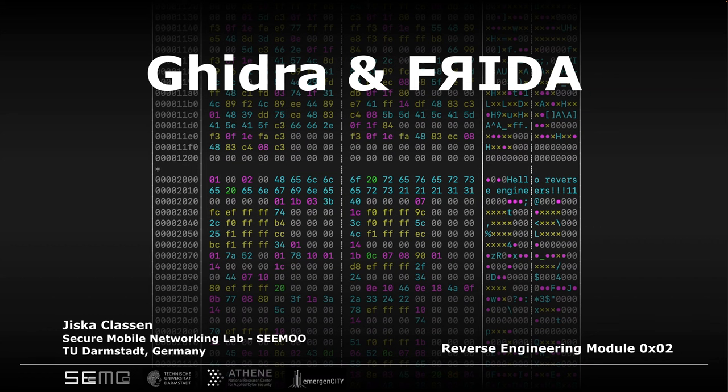Welcome to the second module of the Reverse Engineering Lab, which I'm teaching this semester at TU Darmstadt. In this second module you will learn how to use Ghidra and Frida, which are both open source tools meant for reverse engineering. Ghidra is used for static reverse engineering and Frida is a tool for dynamic reverse engineering. Both run on many platforms, so they will likely work out of the box for your target binary.